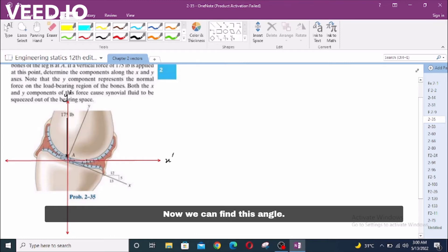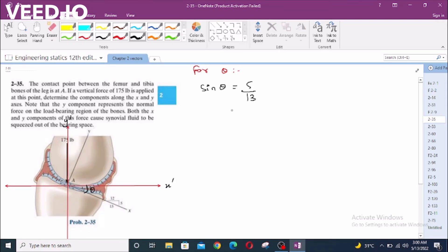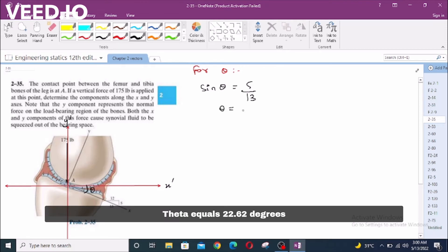Now, we can find this angle. Let's call this Theta by considering this 5, 12, and 13 triangle. For Theta, sin Theta equals 5 over 13, so Theta equals 22.62 degrees.